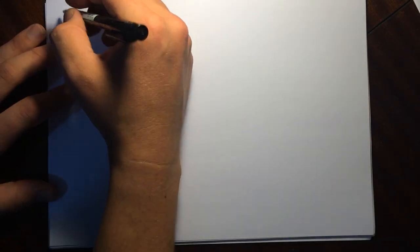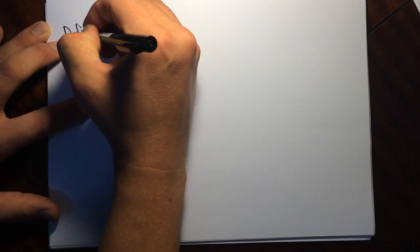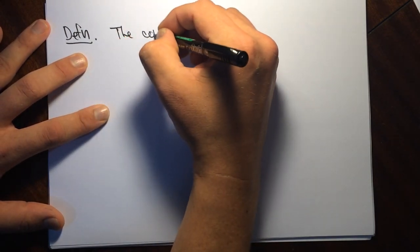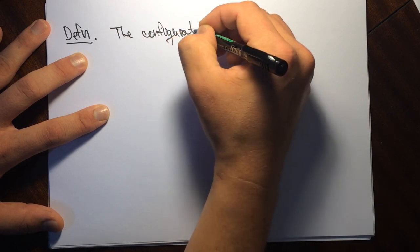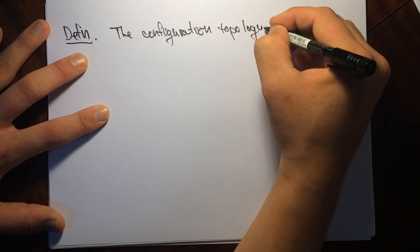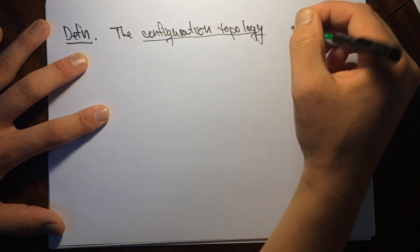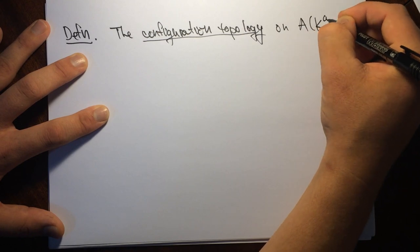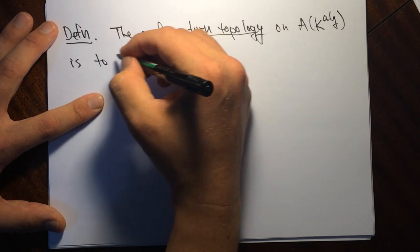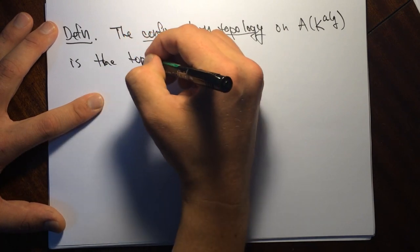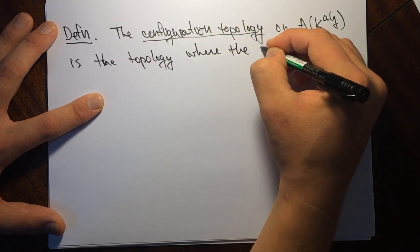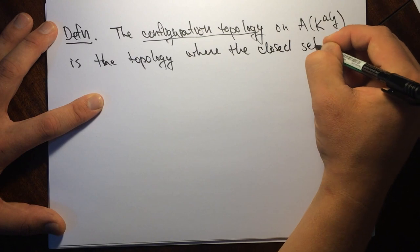Now I can define what the configuration topology is. The configuration topology on this set is the topology where the closed sets are configurations.